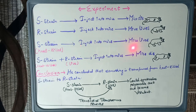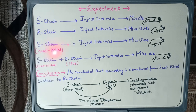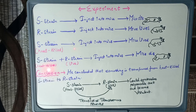Thirdly, he took heat-killed S strain and injected it into the mice. The mice lived, because although S strain is virulent, since it was heat-killed its virulence was lost. And lastly, he introduced heat-killed S strain plus live R strain into the mice, and as a result the mice died.